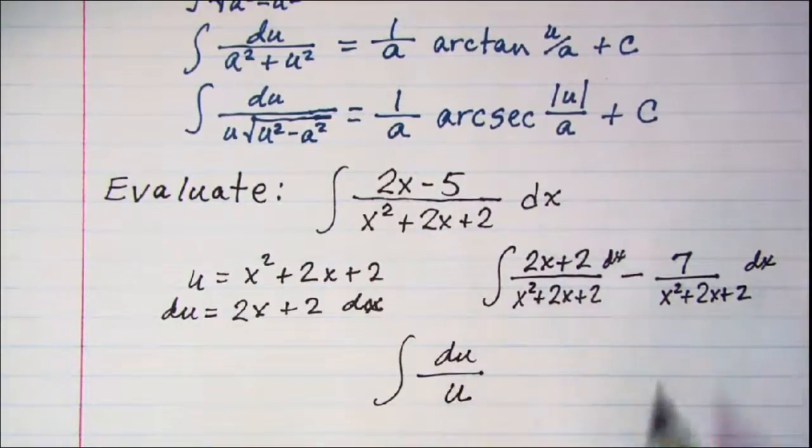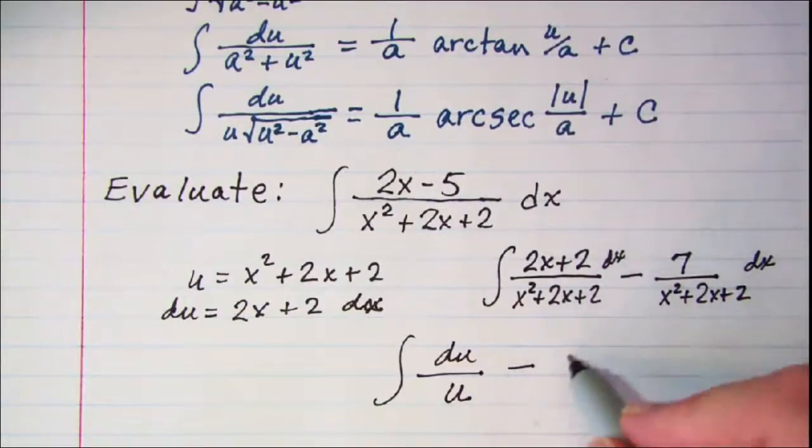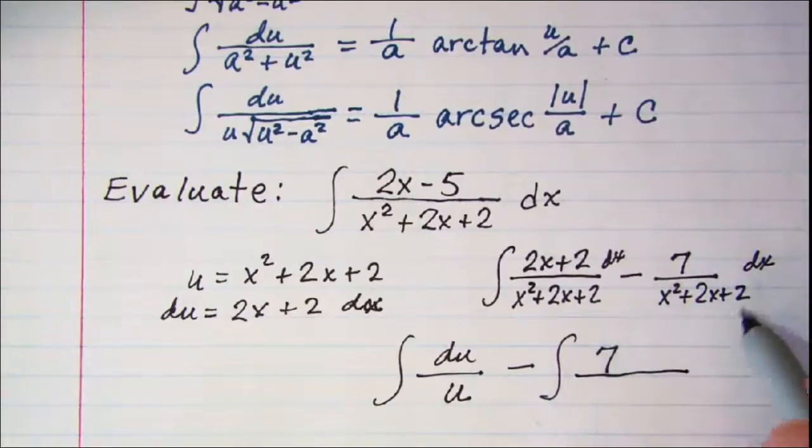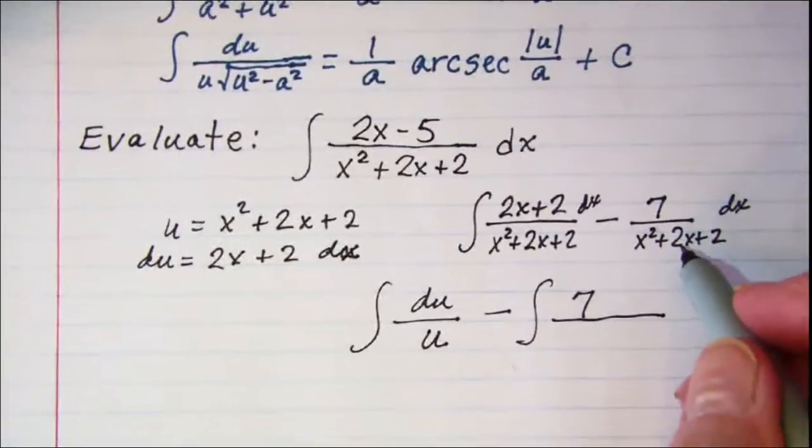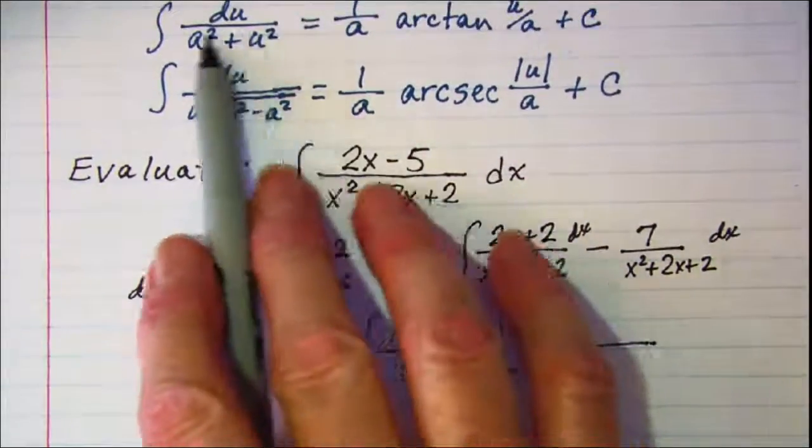And then for this one I have minus the integral of 7 and then let's complete the square on this and see if we can write it as this second formula.